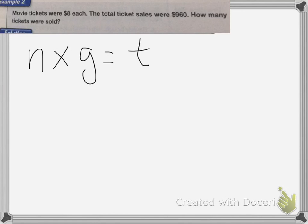So I would put in the numbers here. I would end up with the number of groups I don't know. But I know that each ticket is worth $8. And my total was $960.